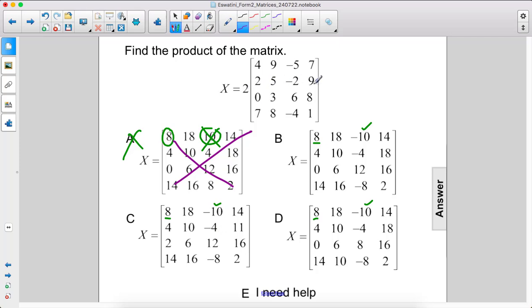2 times 9 is 18. Look, that one says 11 here, so we can eliminate C. Okay, we have 18 and 18. Moving on.